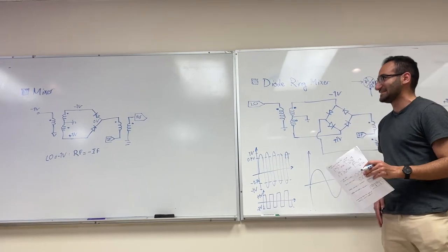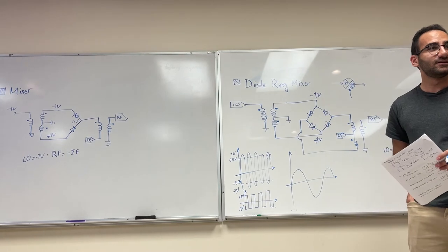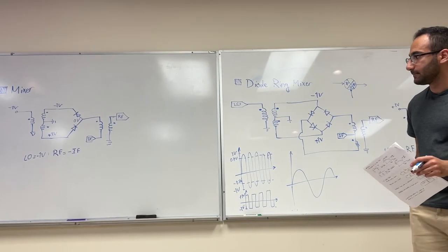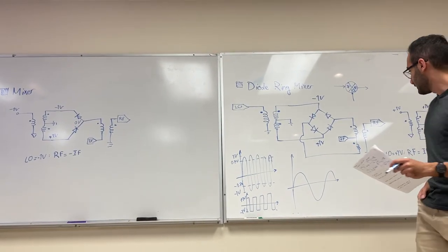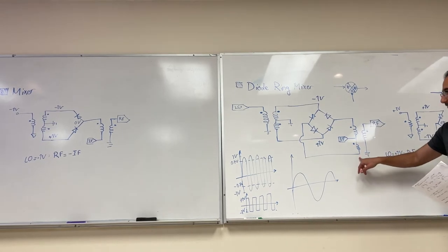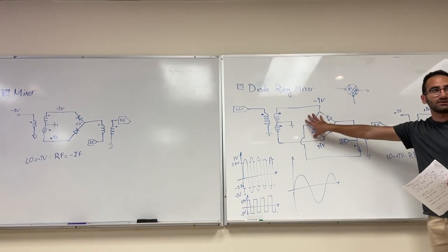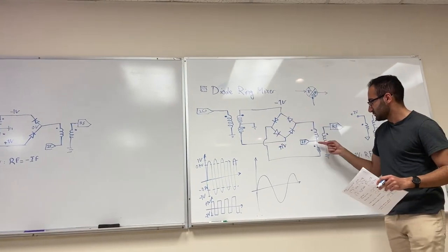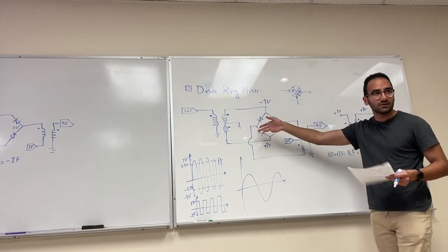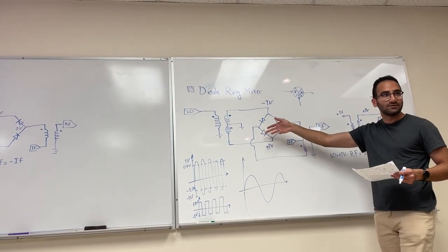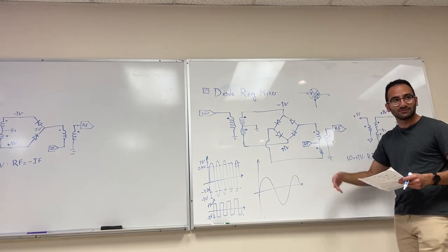Can you explain why the bottom inductor doesn't matter in this case? If you look at this picture, this part of the circuit is completely out, so you basically have an inductor connected to nothing.